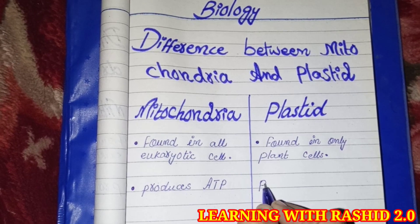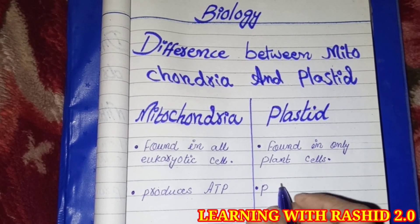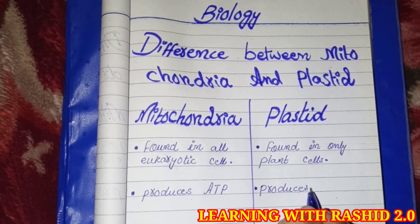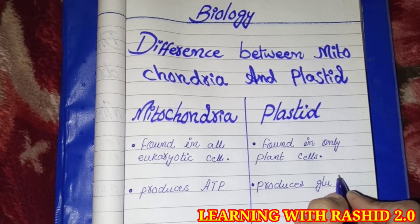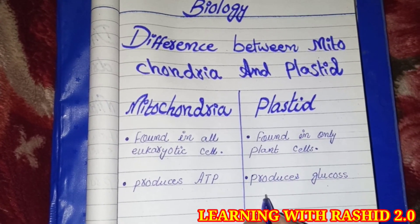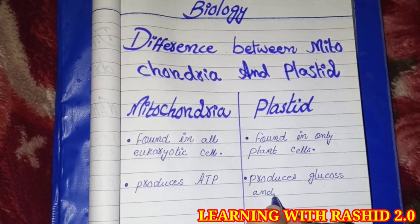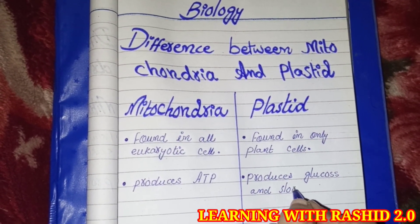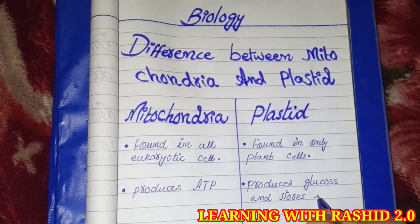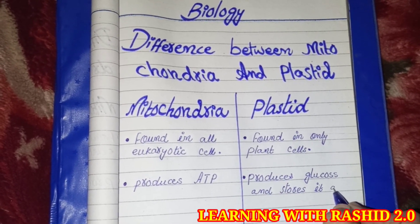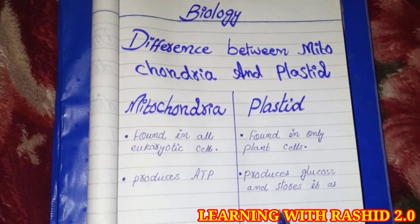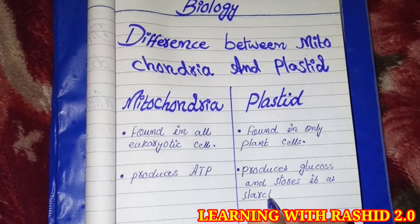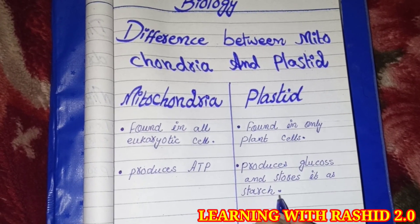Mitochondria produces ATP. Plastid produces glucose and stores it as starch.